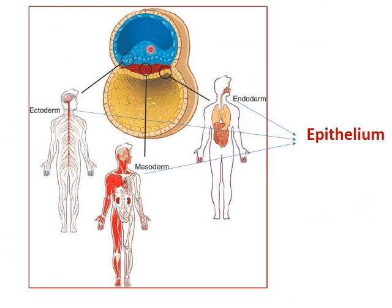There are three germ layers in our body: ectoderm, mesoderm, and endoderm. Epithelium is derived from all three germ layers — for example, the epithelial lining of the oral cavity may differ from glandular epithelium, and it may be derived from ectoderm, mesoderm, or endoderm.